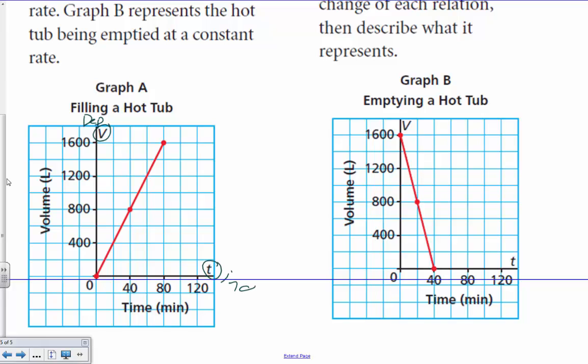Same with the next graph. V is my dependent, always on the vertical. Independent is always on the horizontal. So, rate of change is going to be, delta means change, delta V over delta T.